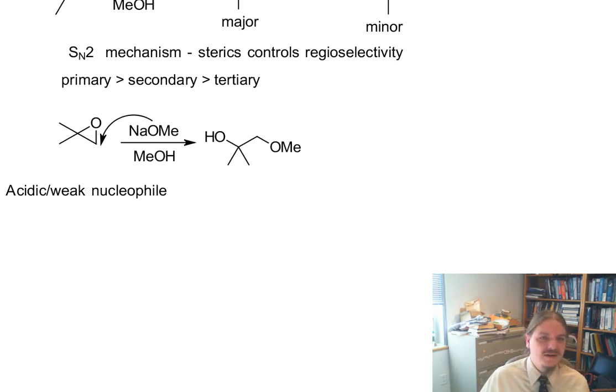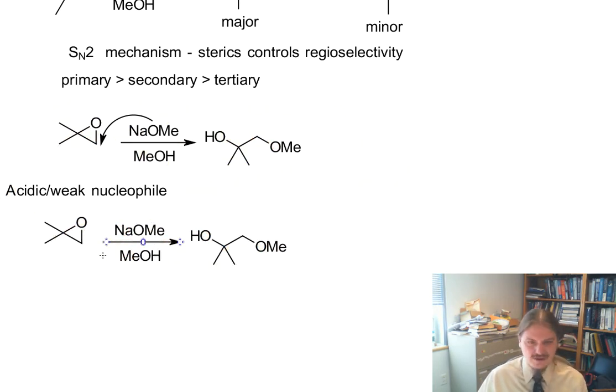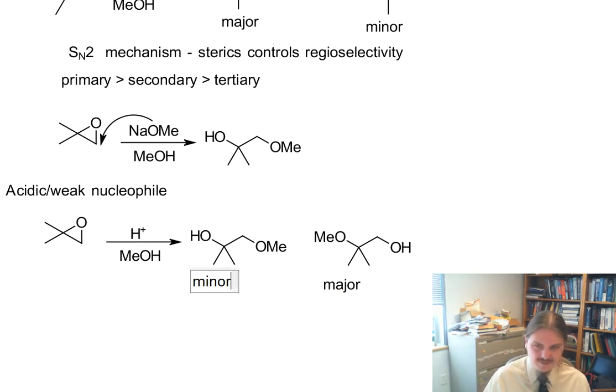So, in the acidic weak nucleophile case, and I'm actually going to use the same epoxide I just did, so compare tertiary with methyl, or tertiary with primary. Now we have methanol in the presence of some acid. We have two different products that we could form.